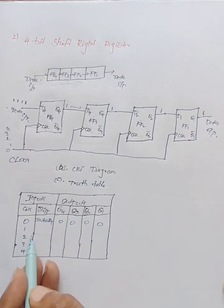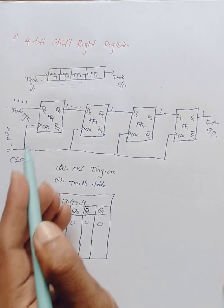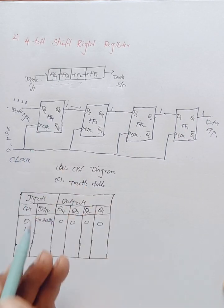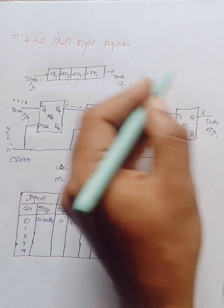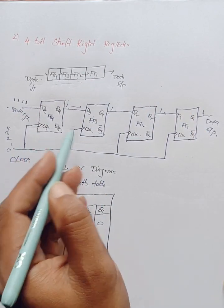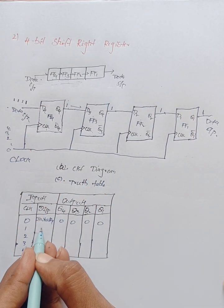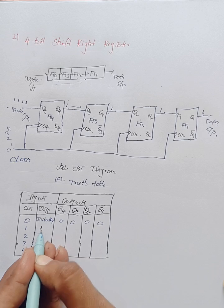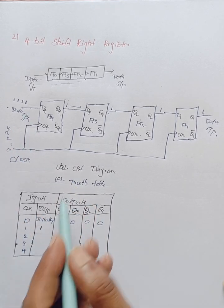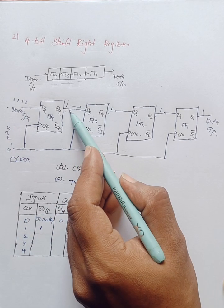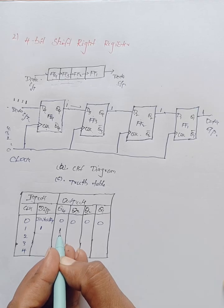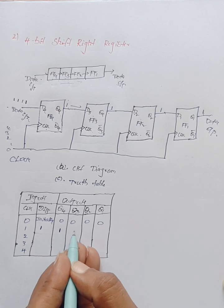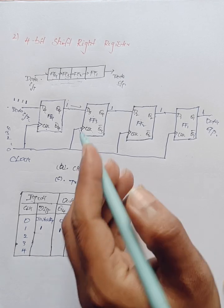Whenever the first clock pulse is applied, all four flip-flops turn on. Input data one is applied at D4, so Q4 value becomes one. The remaining three outputs — Q3, Q2, Q1 — are zeros, because only the first flip-flop has received the data.